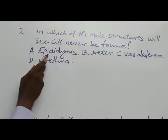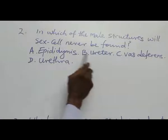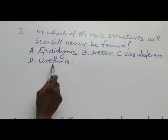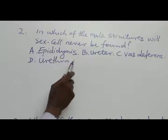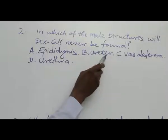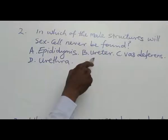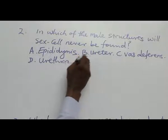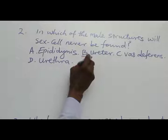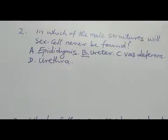The epididymis is where sperms are stored. The vas deferens is the sperm duct that conducts sperm from the epididymis to the urethra. The urethra is the path through which ejaculation occurs. The ureter carries urine from the kidney to the urinary bladder. So sex cells are never expected to be found in the ureter. The answer to number 2 is option B.